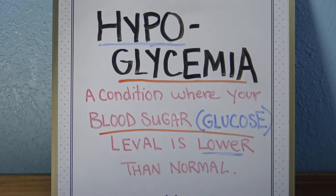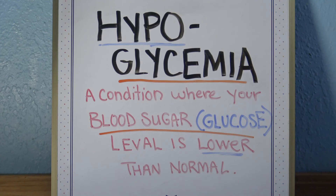Hypoglycemia — hypoglycemia is a condition in which your blood sugar or glucose levels are lower than average. Hypo is low, glycemia relates to blood sugar and glucose measurements. So hypoglycemia means low blood sugar.